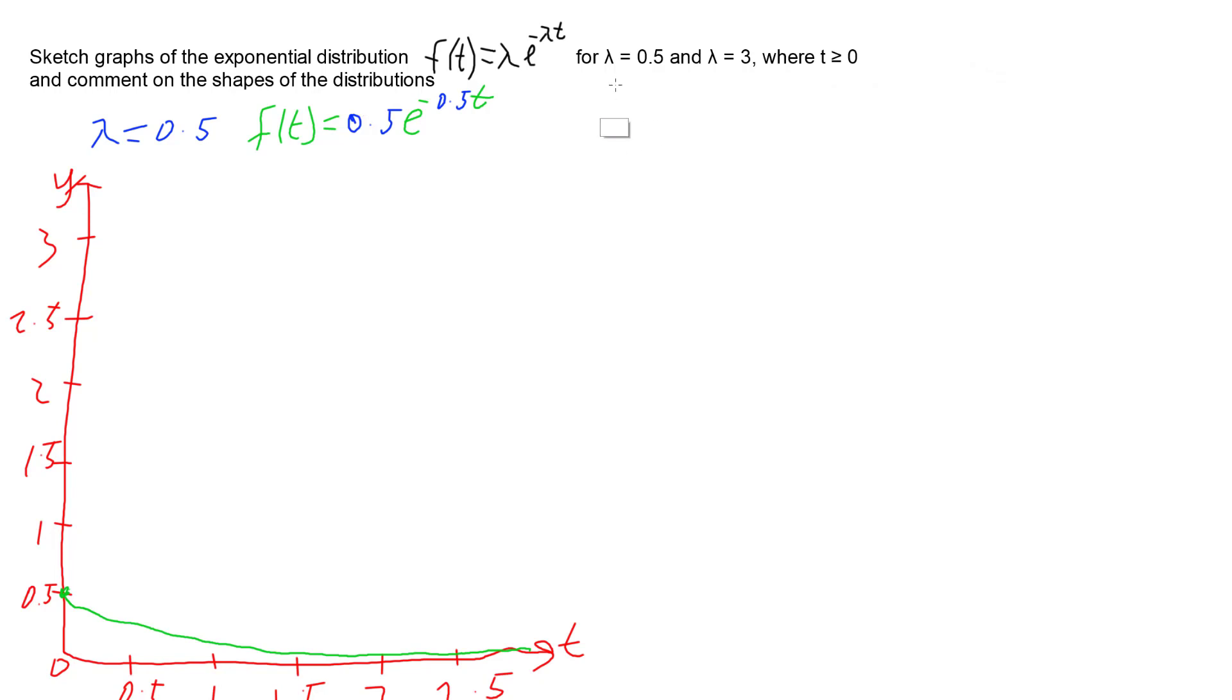So if we now go and have a look at the other graph, which is when lambda equals 3. So we're going to have f(t) equals 3 e to the negative 3 t. And if I draw in a similar set of axes, so that way I can get a similar scale, let's make something a little bit straighter.